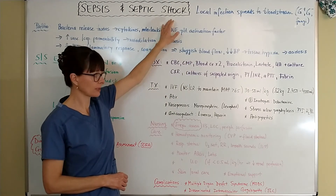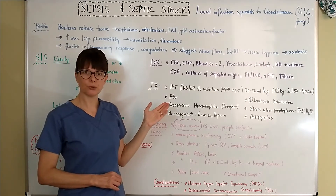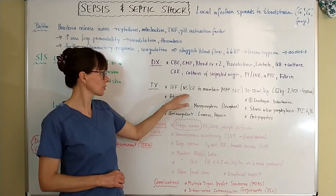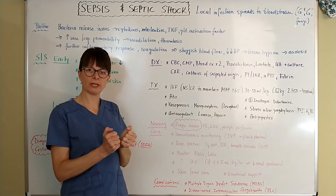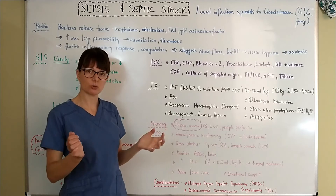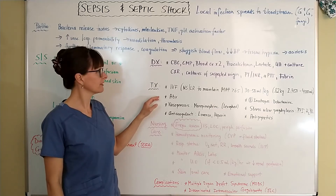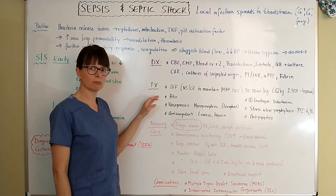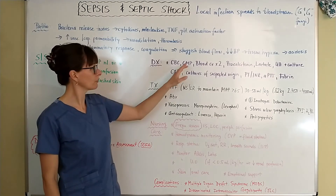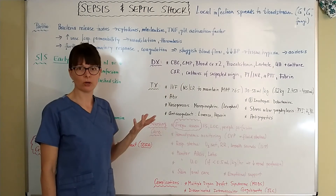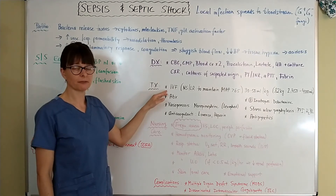Sometimes colloids are also used — albumin is administered after the initial crystalloid resuscitation phase, as albumin pulls fluid from the interstitial space back into the intravascular space to help stabilize blood pressure. Antibiotics are given if there is a bacterial cause of infection; the patient is started on a broad-spectrum antibiotic while waiting for culture results, which can take 48 to 72 hours. If fluid resuscitation is not enough, or the patient has chronic kidney or heart issues, they will be placed on vasopressors.